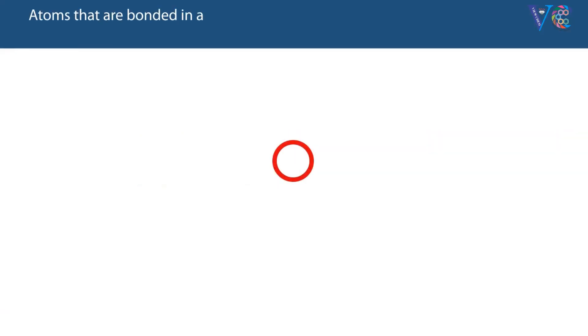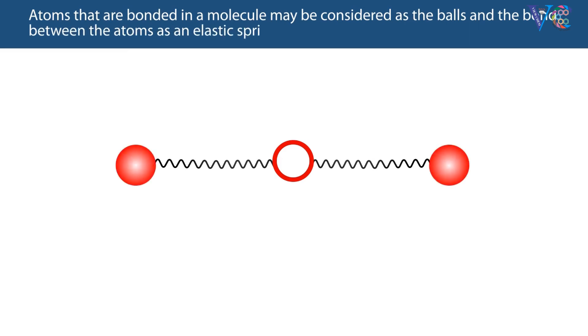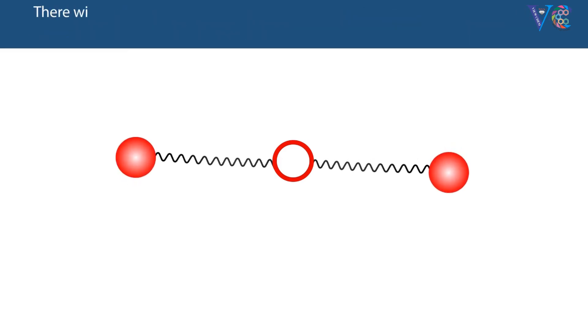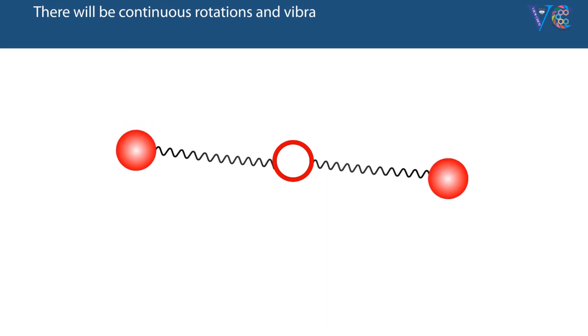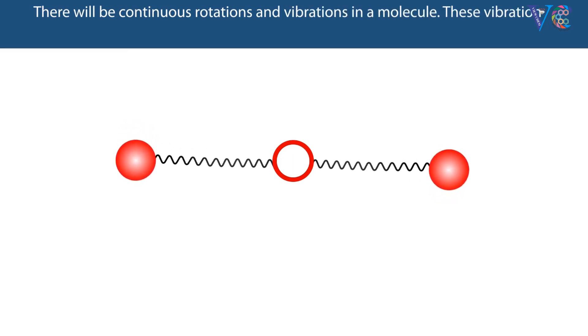Atoms that are bonded in a molecule may be considered as balls and the bond between the atoms as an elastic spring. There will be continuous rotations and vibrations in a molecule. These vibrations may be stretching or bending.